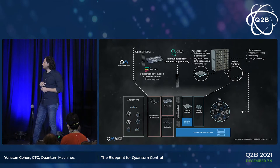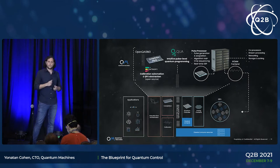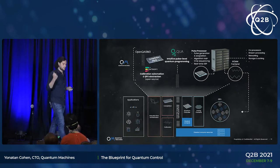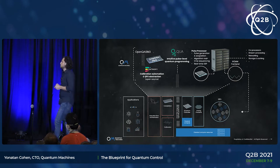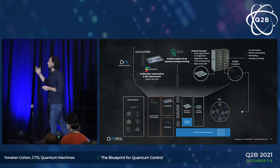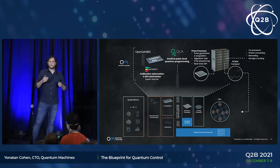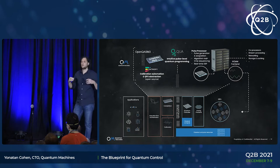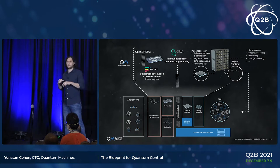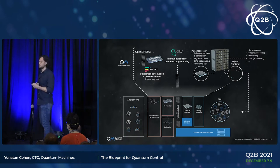In our control software layer we have integration to higher layers of the stack, such as integration with OpenQASM 3 that we're going to release in early 2022, as well as Entropy — our calibration and QPU abstraction platform — and all our open-source libraries that we're developing together with our customers.